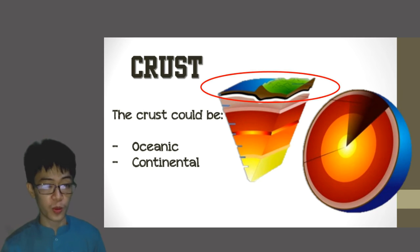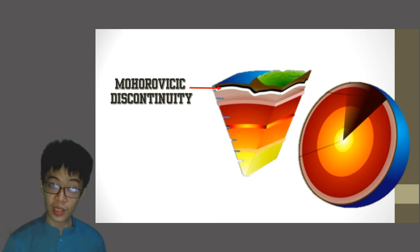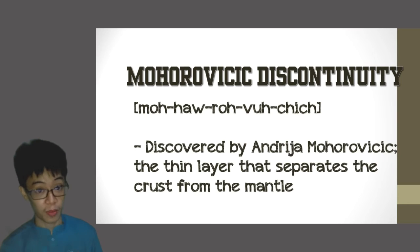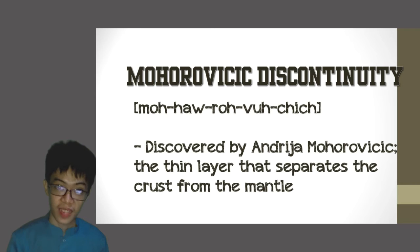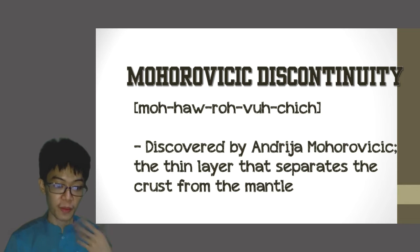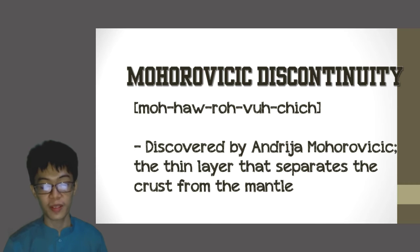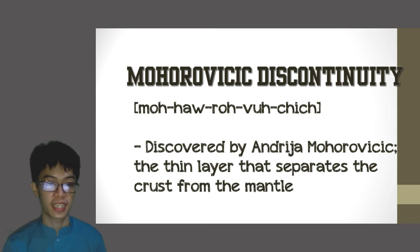The next layer is the mantle, but before we get there, we pass through a boundary called the Mohorovičić Discontinuity. This was discovered by Andrija Mohorovičić. It is the thin layer that separates the crust from the mantle. Remember the name of the discoverer: Andrija Mohorovičić.